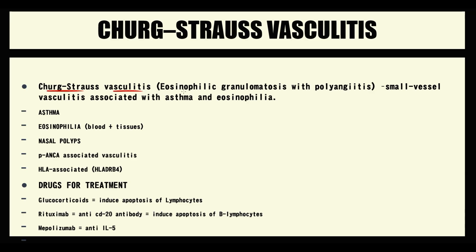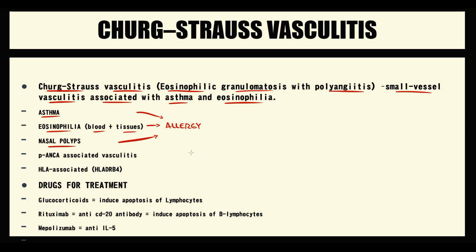Churg-Strauss vasculitis, or eosinophilic granulomatosis with polyangiitis, is a small vessel vasculitis associated with asthma and eosinophilia. The unique feature of this vasculitis is a strong association with allergy, because asthma, eosinophilia, and nasal polyps are all symptoms of allergy. Churg-Strauss vasculitis is P-ANCA-associated vasculitis, which is important because Wegener vasculitis, for example, is C-ANCA-associated — helping in differential diagnosis. Also, it is HLA-associated vasculitis, meaning people with HLA-DRB4 alleles have a genetic predisposition to this disorder.